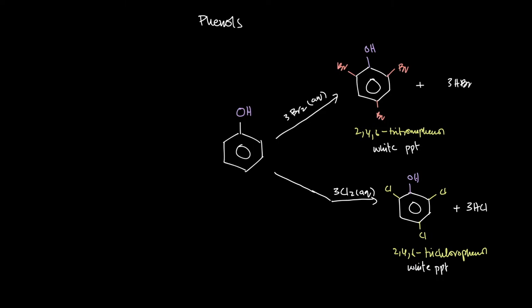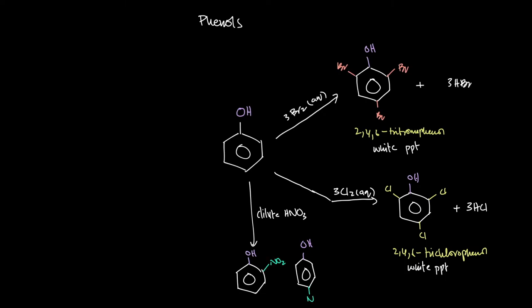Because phenols are so much more reactive, you can react them with dilute nitric acid — just HNO3, no catalyst needed. The product is either 2-nitrophenol or 4-nitrophenol, with H2O as the byproduct, reflecting the 2,4,6-directing nature of the OH group.